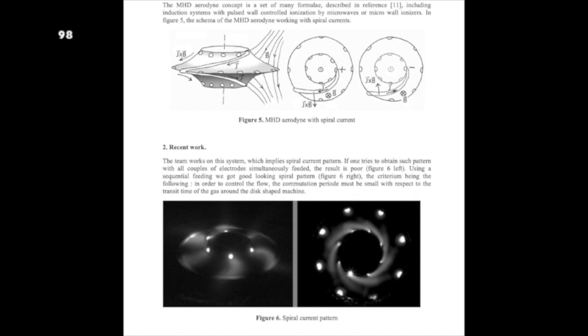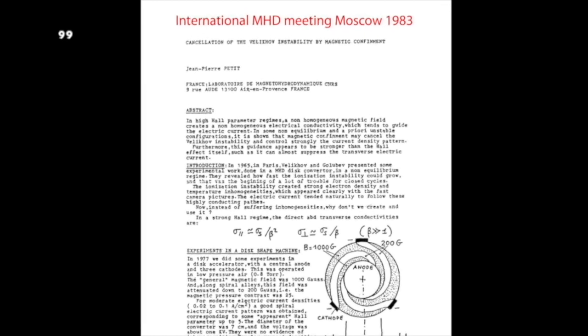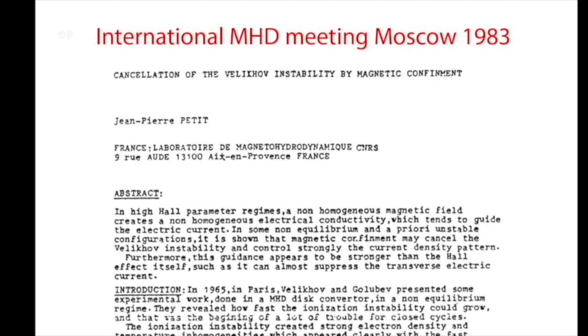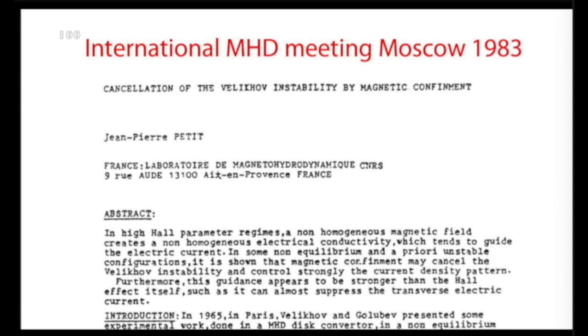This presentation and publication was accompanied by a mass of results both theoretical and experimental. Here we have the obtaining of spiral electric currents. Here you have the first presentation of the concept of suppression of Velikov's ionization instability by magnetic confinement. A presentation that was made at the MHD International Symposium in Moscow in 1983. Here is the experimental confirmation of this concept. This is a major achievement. Indeed, without such a system there would simply be no MHD for moderate temperature plasmas subjected to a very strong magnetic field.